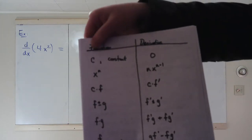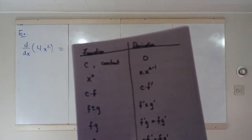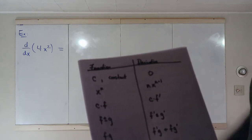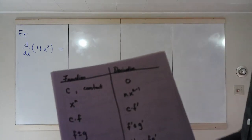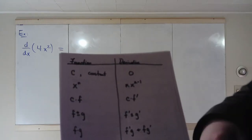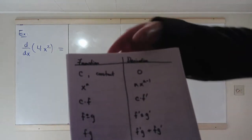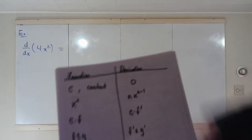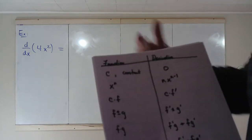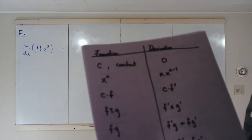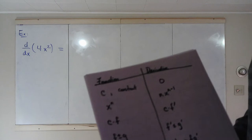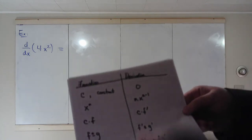The first rule: if the function is a constant, like f(x) equals 4, f(x) equals 12, f(x) equals negative 8, or f(x) equals pi, the derivative is just 0. In the definition, that shows up because the numerator of that fraction is just c minus c, which is 0.